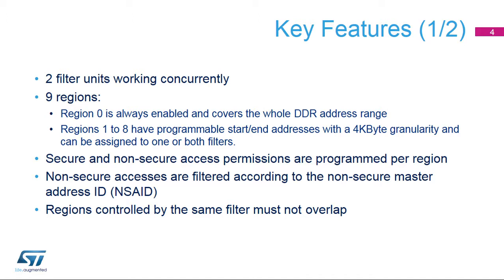Access filtering can support up to nine regions. Region 0 is always enabled and covers the whole DDR address range. Regions 1 to 8 have programmable start and end addresses with a 4KB granularity. A region can be assigned to one or both filters.